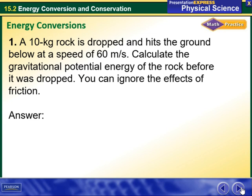Another example: a 10 kilogram rock is dropped and hits the ground below at a speed of 60 meters per second. Calculate the gravitational potential energy of the rock before it was dropped. You can ignore the effects of friction.